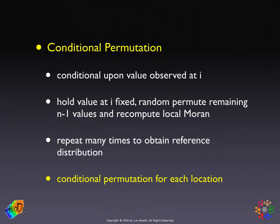The catch is that we have to do this for each location. Luckily, there are clever ways to do this in parallel. Otherwise, with 3,000 locations and 999 random permutations each, that's going to take a while. We carry out inference by figuring out a pseudo p-value from the conditional permutation at each location.